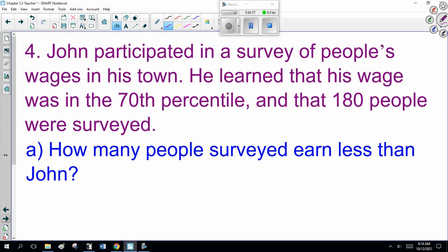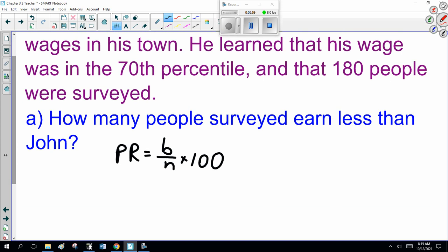Now, John participated in a survey of people's wages in his town. He learned that his wage was in the 70th percentile and that 180 people were surveyed. How many people surveyed earned less than John? Now, PR equals B over N times 100. So, his percentile was the 70th. We don't know how many people were below, but we know 180 people were surveyed. So, we're solving for B.